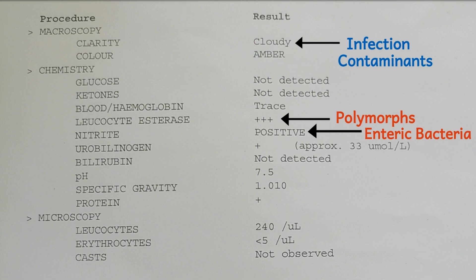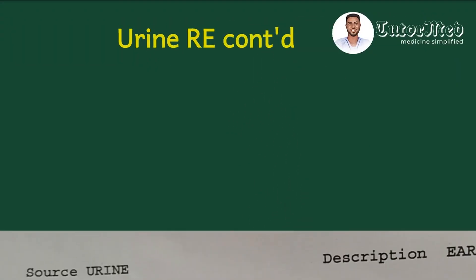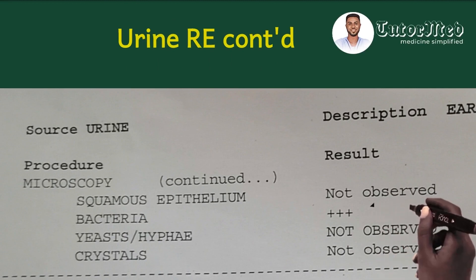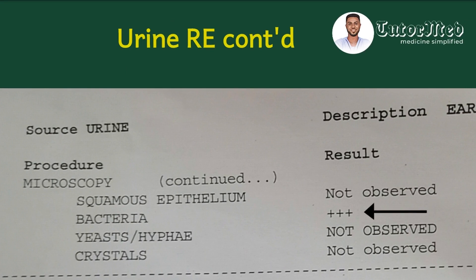On microscopy, there is a significant number of white blood cells, confirming they are responsible for the positive leukocyte esterase on dipstick. Bacteria are three pluses, explaining the WBCs, the positive leukocyte esterase, the positive nitrite, and the cloudy urine. Importantly, squamous epithelium is not observed, meaning the urine was not contaminated — squamous epithelium is commonly present when there is contamination.